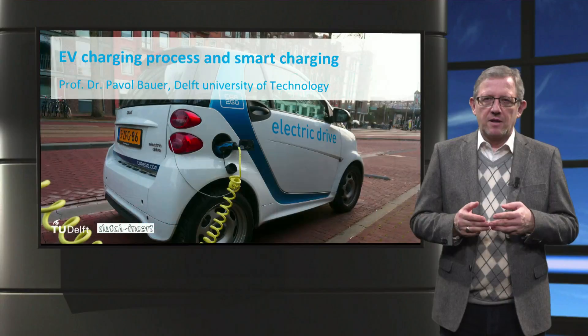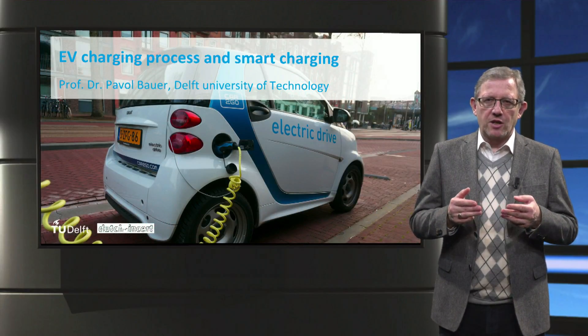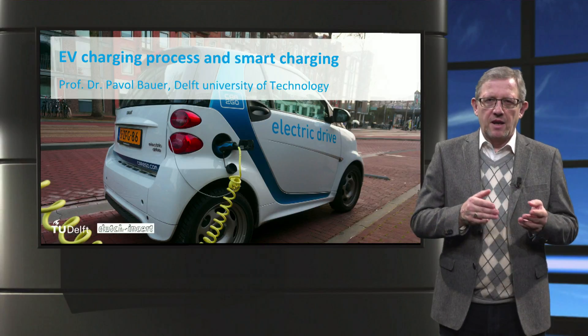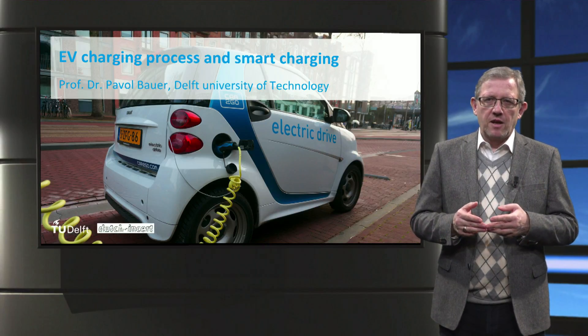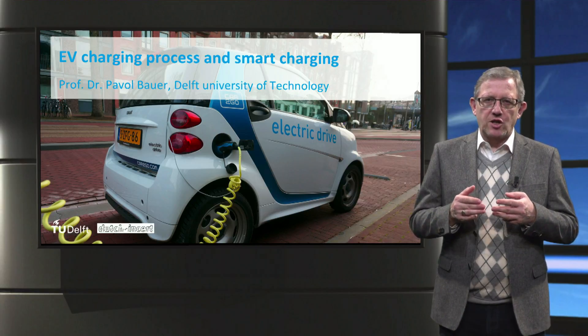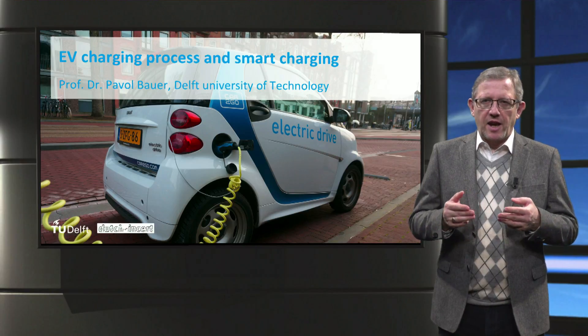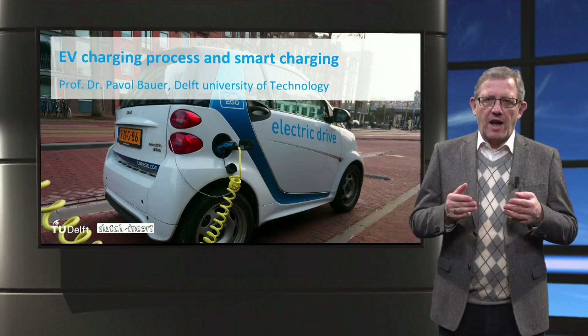To summarize, the charging process of an electric vehicle battery has two distinct regions, the constant current and constant voltage charging region. Fast charging is typically done in the constant current region. The C-rate is a vital charging parameter as high C-rates lead to increase in battery losses and lowering of the battery lifetime.